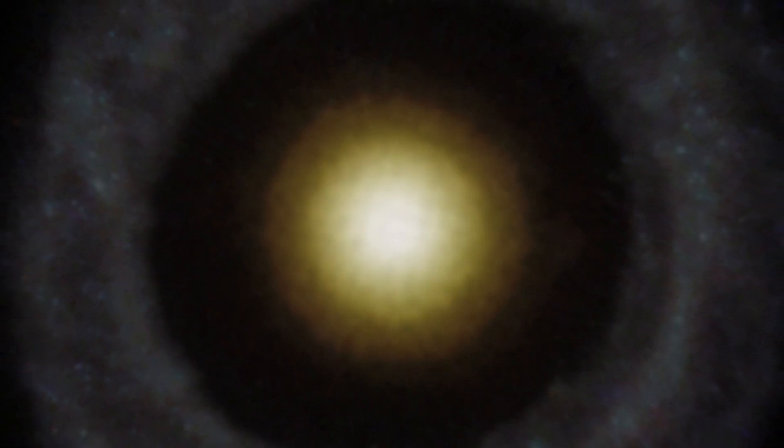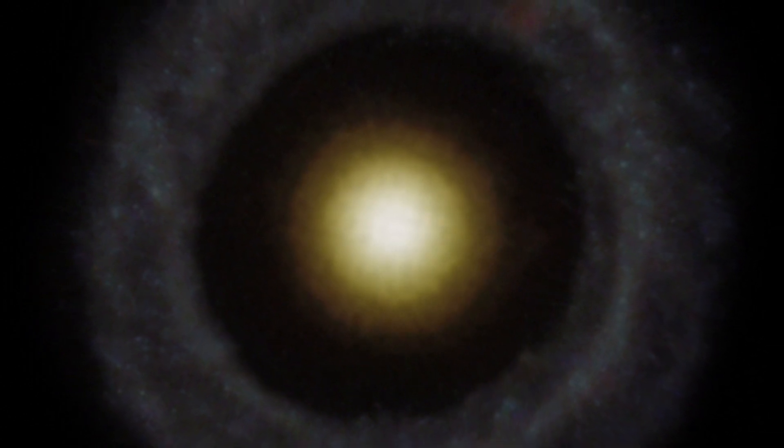In 1950, astronomer Arthur Hoag came upon a tiny, faint ring surrounding a ball-like center about 600 million light-years away in the constellation Serpens.